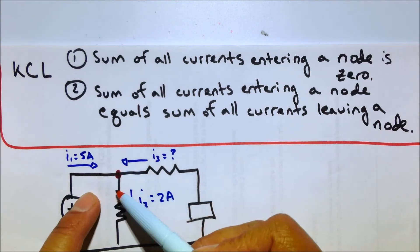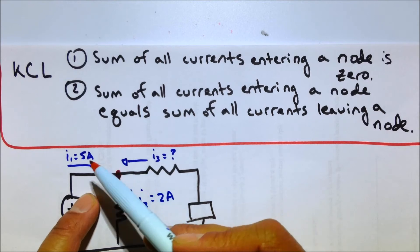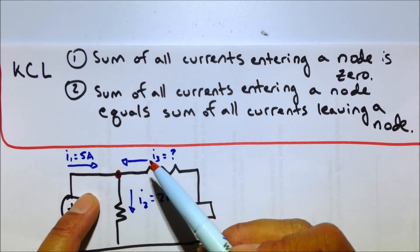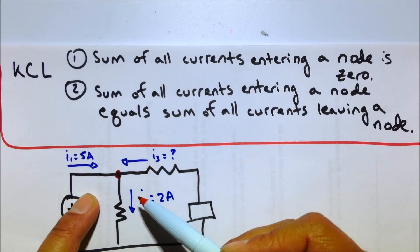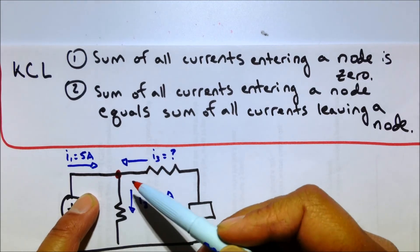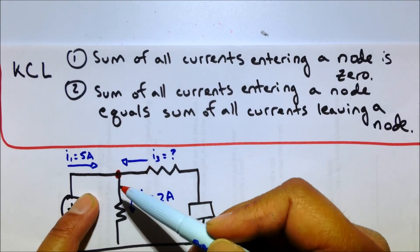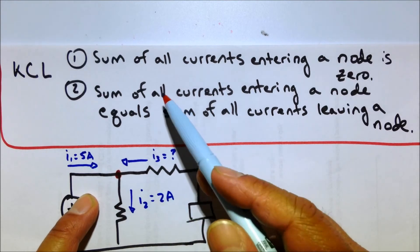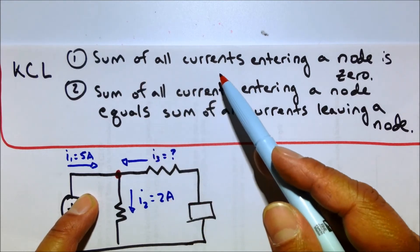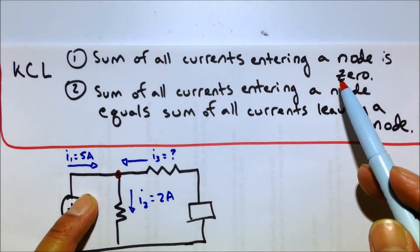So when you actually do sum them all up, you'll have a positive current in some place, a positive current in some place, and then a negative current, or a minus, you'll be minusing a current, because it's actually leaving it. And that's what they're really referring to by the sum of all currents entering a node is zero.